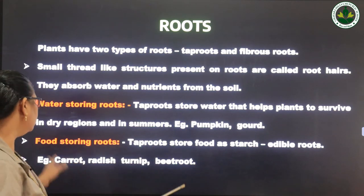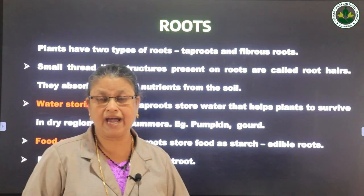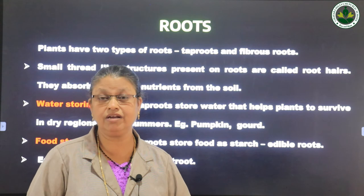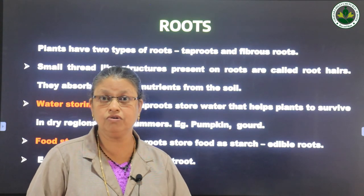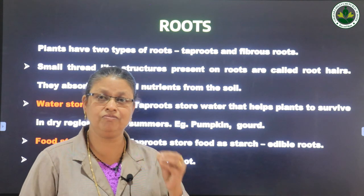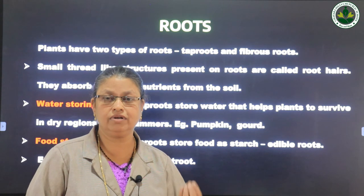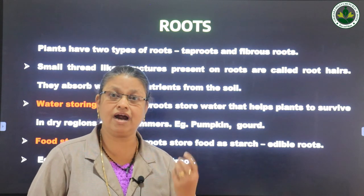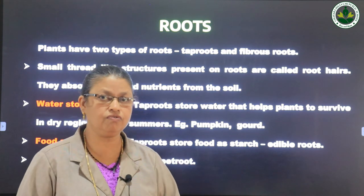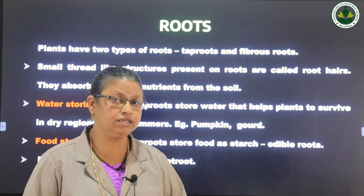The next type is food storing roots. Roots of some plants store food. For example, tapioca — the tapioca roots store food, and that is what we eat. Other examples are carrot, beetroot, and radish. All of these store food in the roots.